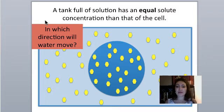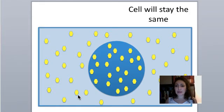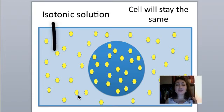It turns out that that's indeed the case. Water will move in and water will move out as well. This causes the cell to stay the same as a result, and this is what's called an isotonic solution.